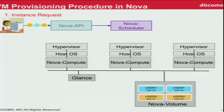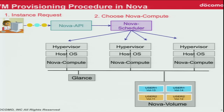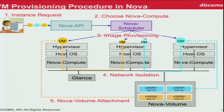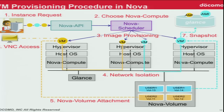Before going into detail, let's review the current VM provisioning procedure in Nova. First, a user requests an instance. Once the request reaches the Nova scheduler, the Nova scheduler chooses the appropriate Nova compute based on instance type. The instance is then provisioned on one of the Nova compute nodes. If the user wants, they can create a network among tenants, attach a Nova volume to a VM, and finally access the VM through SSH or VNC. You can also create a new machine image from the running instance.